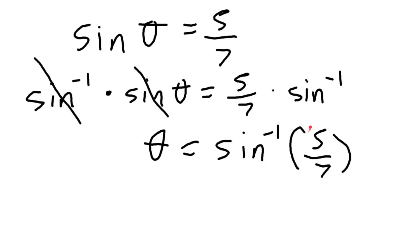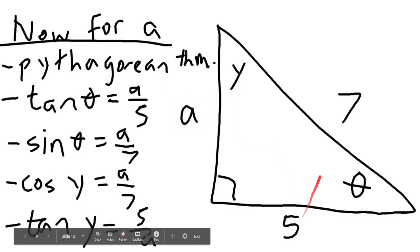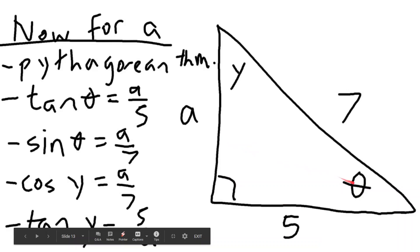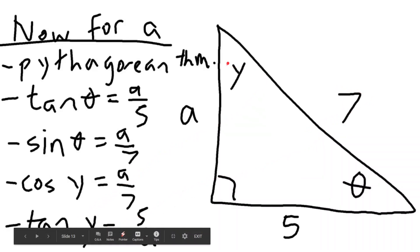Now we're trying to solve for side a. There are actually many ways: we can use the Pythagorean theorem — a² + 5² = 7². We can use tangent of theta equals a over 5, since a is opposite theta and 5 is adjacent. We can use sine theta equals a over 7, since a is opposite and 7 is the hypotenuse. We can also use cosine y equals a over 7, or tan y equals 5 over a.